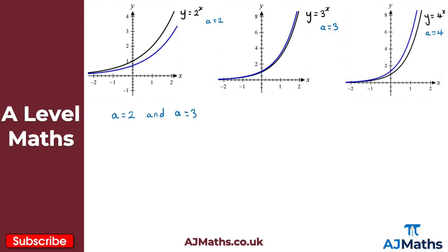We do have that point. It has to occur between 2 and 3 — when a = 2 the gradient function is below the original, and when a = 3 it's above. This value occurs when a is approximately 2.71828. This is actually a special number called Euler's number, represented using e. So e ≈ 2.71828 and so on — it carries on. This is an irrational number, just like pi, and very important in A-level maths.